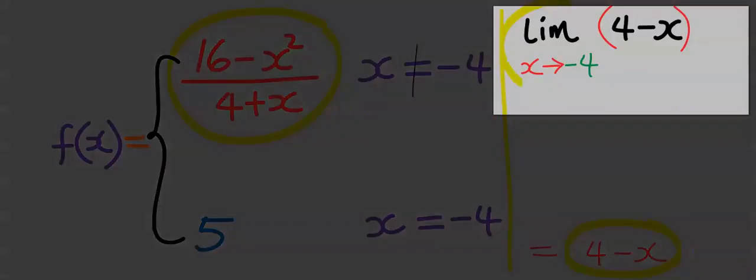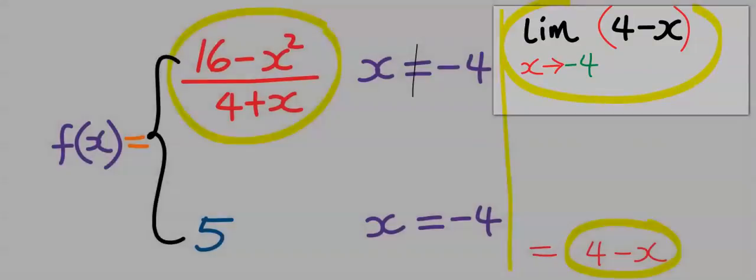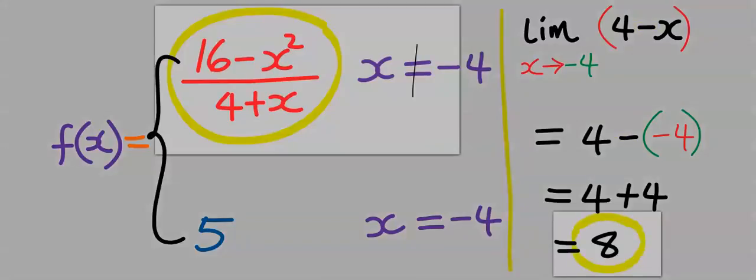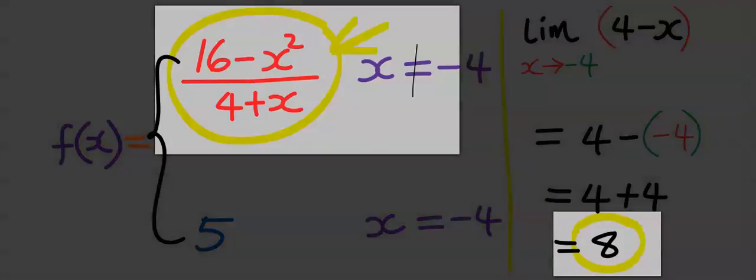We take the limit of this function by substituting x for -4. Beware of this negative sign. This gives us 8 for the left-hand limit.